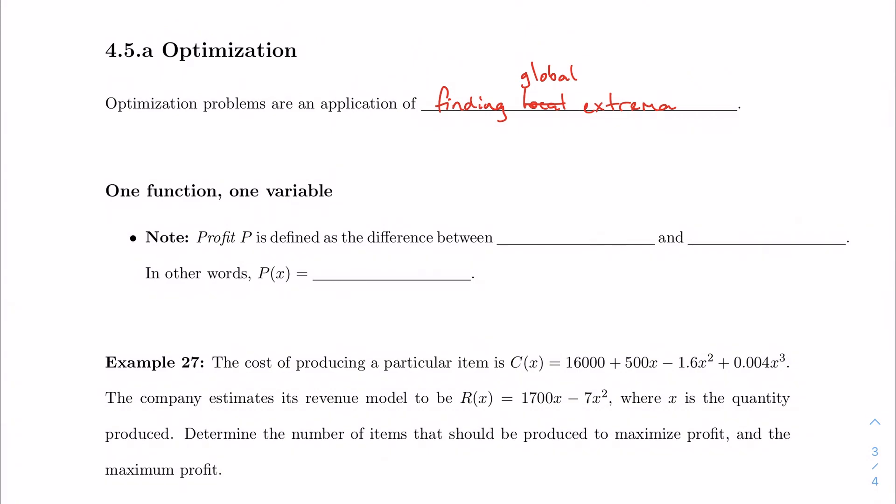We're going to start out by looking at these in just one function and one variable, and this way they look very similar to what we saw when we first talked about finding the max or minimum of a function. Because these optimization problems have a lot of application in business modeling and just modeling in general, I want to talk about profit first.